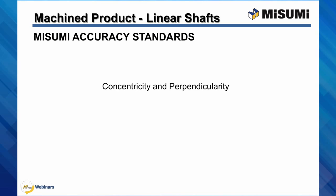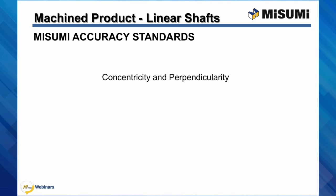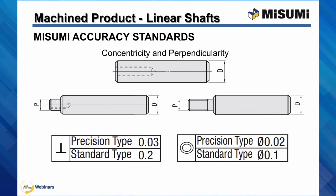Also measured are the concentricity and perpendicularity of each shaft. The perpendicularity tolerance measures 0.03 millimeters for precision type shafts and 0.2 millimeters for standard. The concentricity tolerance of Misumi linear shafts measures 0.2 millimeters for precision type and 0.1 millimeters for standard types.